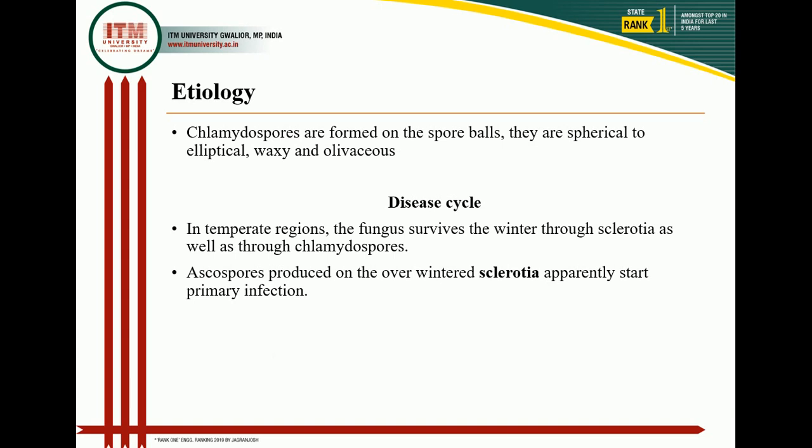Etiology of Claviceps oryzae: chlamydospores are formed on the spore wall; they are spherical to elliptical, waxy, and olivaceous in shape. In the disease cycle, in temperate regions the fungus survives winter through sclerotia as well as through chlamydospores. Ascospores produced on overwintering sclerotia apparently start primary infection.